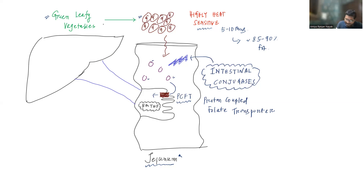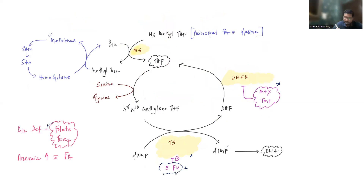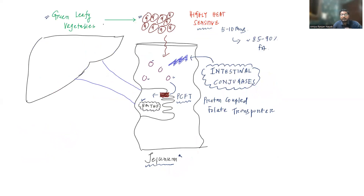In the jejunum epithelial cells, folic acid is converted to 5-methyltetrahydrofolate (5-MTHF), which is the predominant form found in plasma. However, this is not the active form — it has to be converted to tetrahydrofolate with the help of vitamin B12 to become active. This monoglutamate form is converted to 5-MTHF before entering the portal circulation and going to the liver.